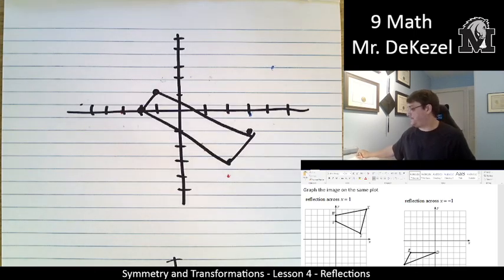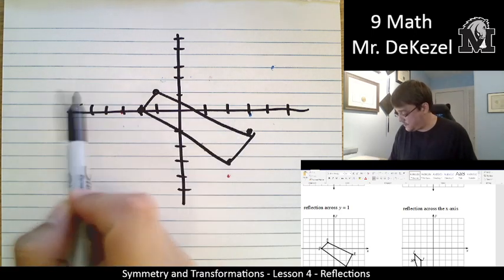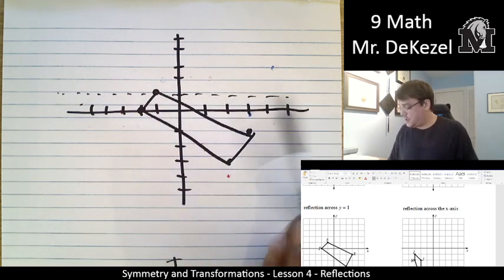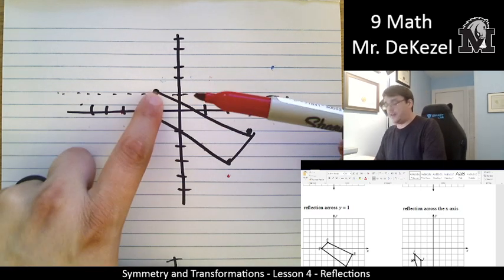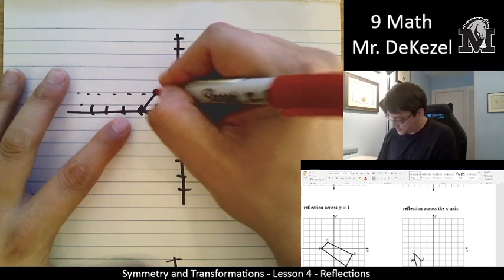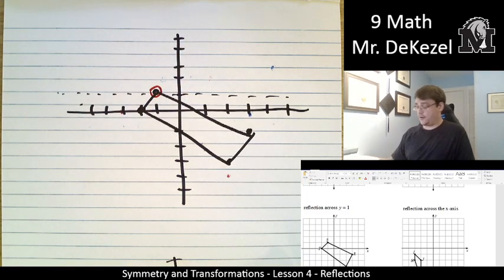Let's do another one. This one is asking us to reflect across y equals one, so that is this point right here, y equals one. So, instead of going left to right, we're going to go up and down. This value is zero away from the line, so it's going to stay right there. I'm going to put a circle around it to represent that that is also a red dot.